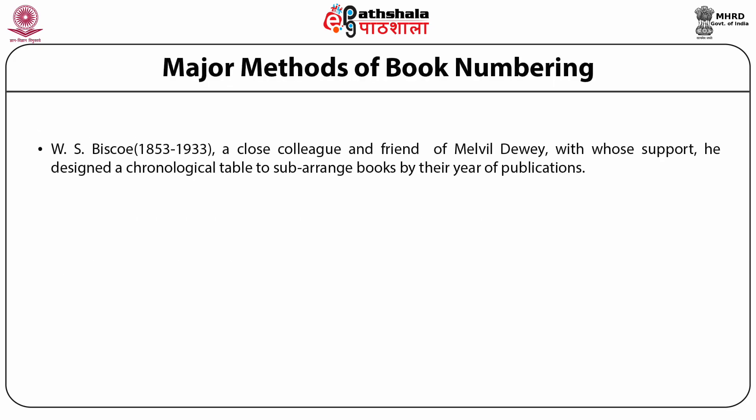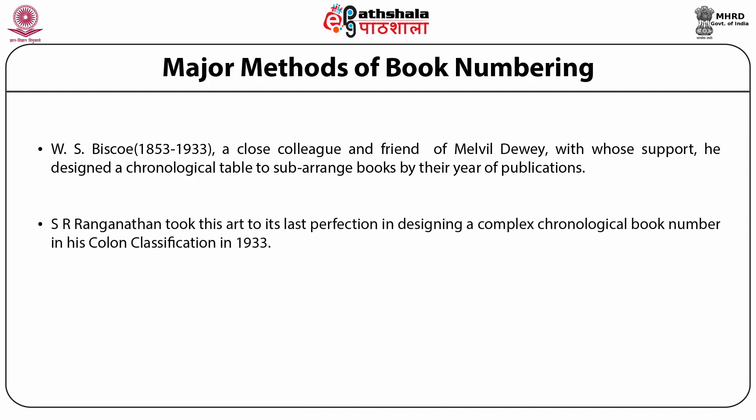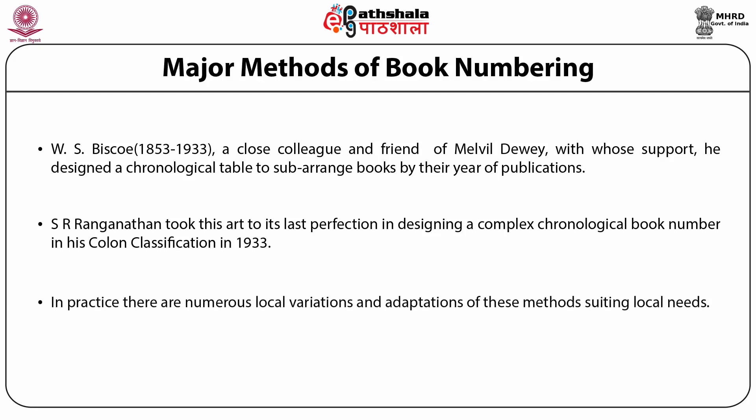W.S. Biscoe, a close colleague and friend of Melville Dewey, with whose support he designed a chronological table to sub-arrange books by their year of publication. This method was also supported by Melville Dewey. Ranganathan took this art to its last perfection in designing a complex chronological book number in his book Colon Classification, published in the year 1933, and his base was the chronological book numbering system. In practice, there are numerous local variations and adaptations of these methods suited to local needs.